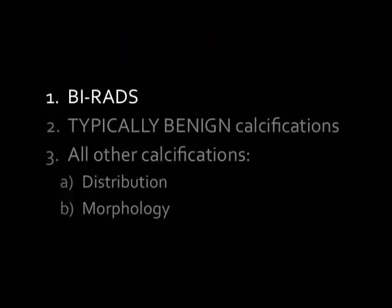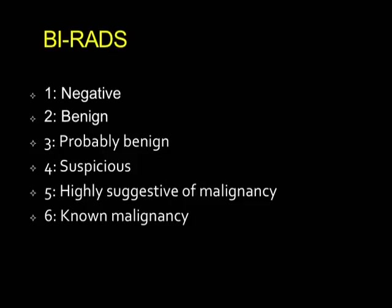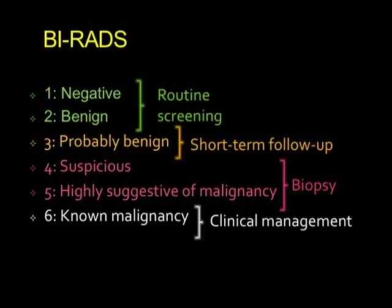Today we'll very briefly go over BIRADS. There are six categories, and you can split them up by what they mean for management. The first two categories lead to routine screening. The third category guides you to short-term follow-up. Categories four and five lead to biopsy. For a BIRADS V, you are 95% sure this is a cancer, so if a biopsy turns out benign, you're not satisfied and go on to surgical biopsy. Category six is for known malignancy.